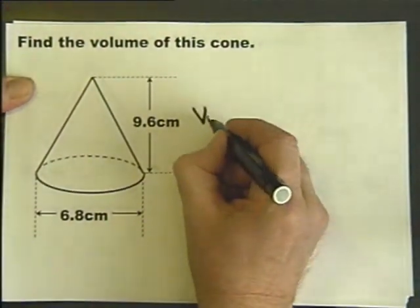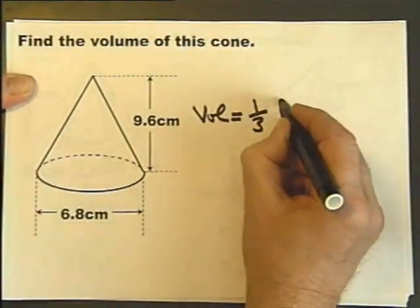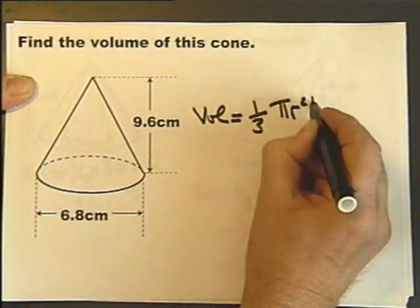Volume of this cone. Volume of a cone is the same as the volume of a pyramid, it's a third. The area of the base, times the perpendicular height.